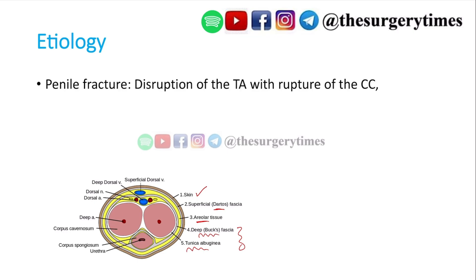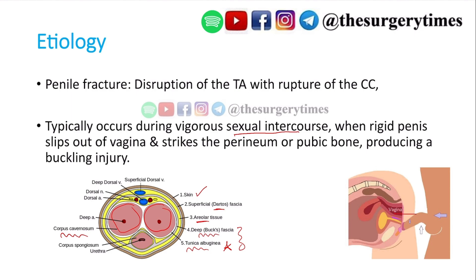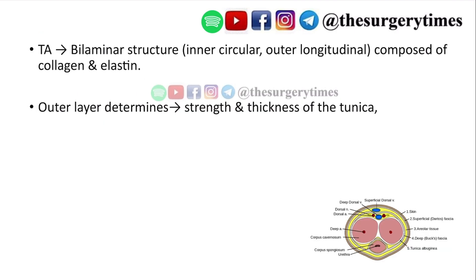The definition: penile fracture is nothing but disruption of the tunica albuginea with rupture of the corpora cavernosa. Typically it occurs during vigorous sexual intercourse when the rigid penis slips out from the vagina and strikes the perineum or pubic bone, producing a buckling injury.